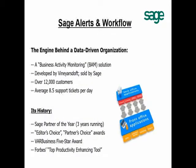The technology I'm talking about today is called Sage Alerts and Workflow. It's classified by industry analysts under what's called Business Activity Monitoring, or BAM. Personally, I prefer to think about Sage Alerts and Workflow as a smoke detector for your business data — just as smoke detectors protect our houses, protecting and acting on critical business data is every bit as important.